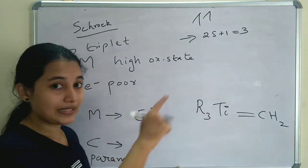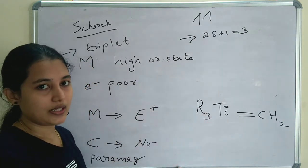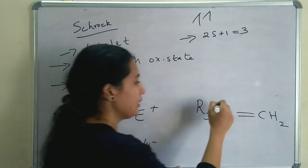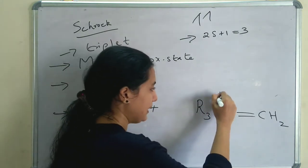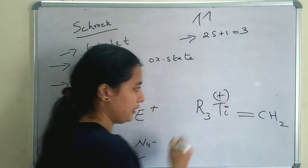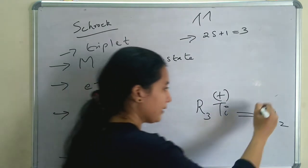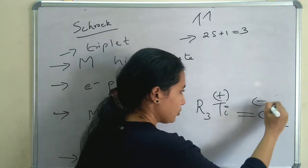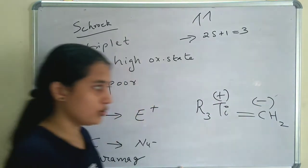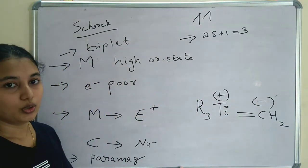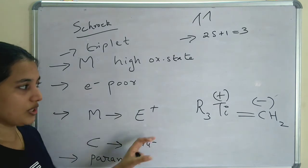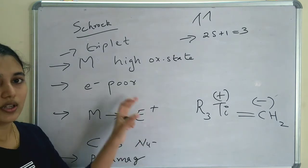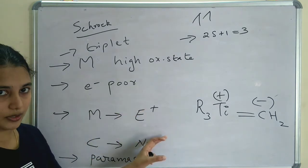So in Schrock carbene, which is electrophilic in nature? Titanium — the metal atom is electrophilic. And the carbene carbon is nucleophilic in nature. Just the reverse of Fischer carbene.